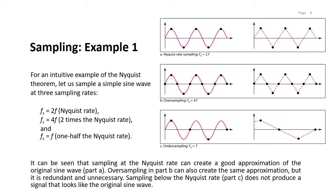When the sampling rate Fs equals 4f, this is oversampling, but it creates the same approximation as when Fs equals 2f. It is redundant and unnecessary because you need to sample more points of the analog signal. In the third scenario, when Fs equals f — one half the Nyquist rate — sampling below the Nyquist rate does not produce a signal that looks like the original sine wave. This is undersampling. So we have the ideal situation at 2f (Nyquist rate), and we can see what happens with oversampling and undersampling.